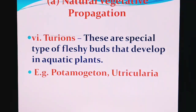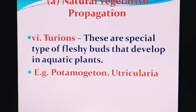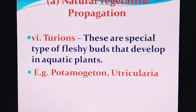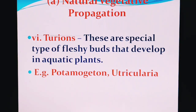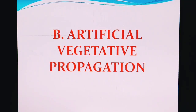Further, another example is turions, found in aquatic plants such as Utricularia and Potamogeton. Here, fleshy buds are found, and on their own these fleshy buds generate a new plant. This is again a type of natural vegetative propagation. So these were the types of natural vegetative propagation.